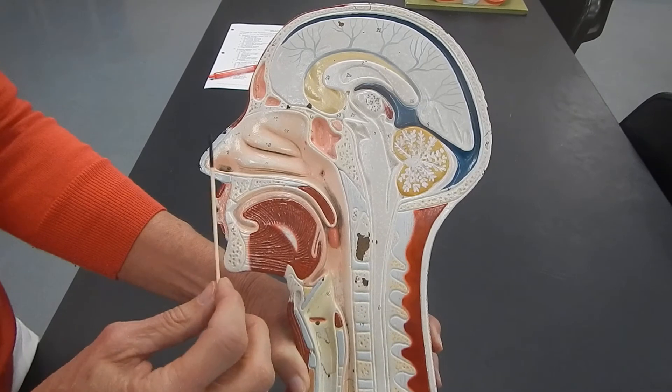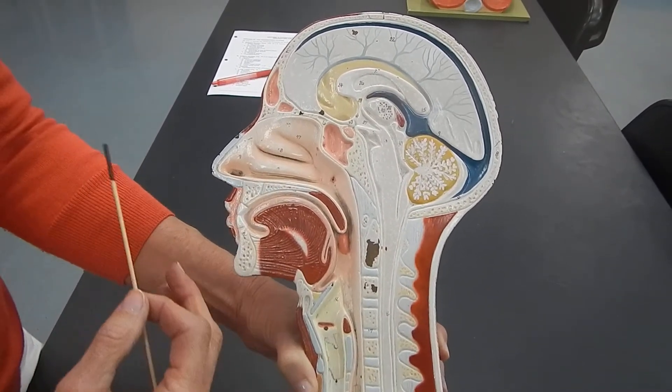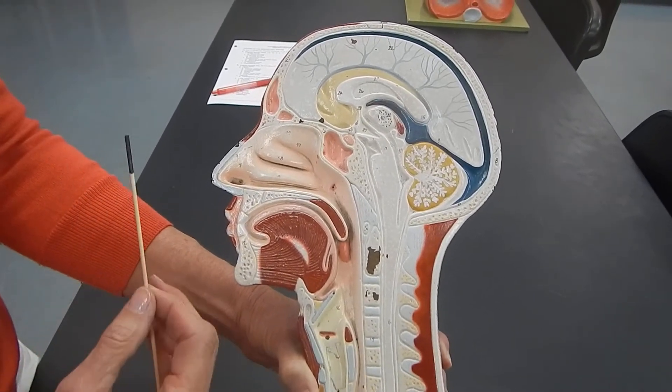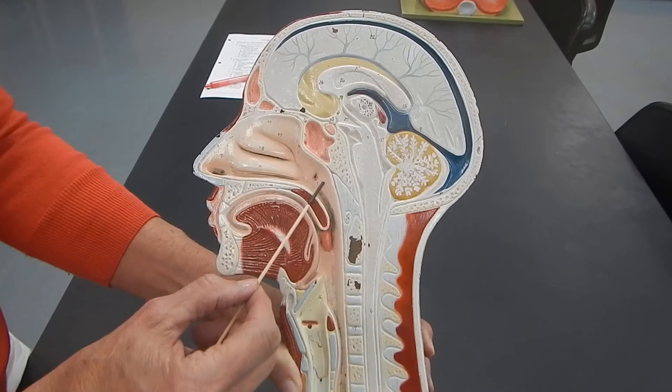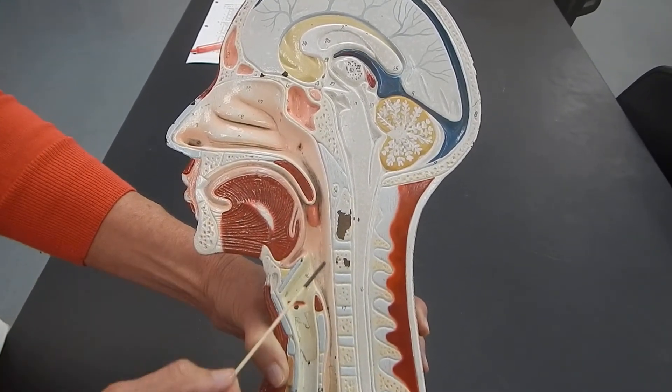Then we've got the area that people usually refer to as their throat. But throat is not an anatomical term. Our term for throat is pharynx. This is the pharynx. The pharynx has got three individual regions.